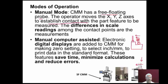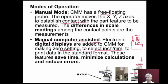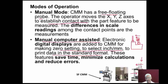An advancement over manual mode is the manual computer assisted mode, where electronic digital displays are added to the CMM. These allow zero setting, selection of inch or metric system, and printing data in a standard format. This computer assistance saves time, minimizes calculations, and reduces errors. A shop floor CMM can be mounted on a table with wheels so it can be moved wherever measurement is required.